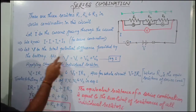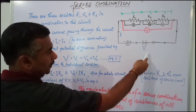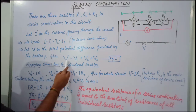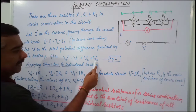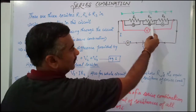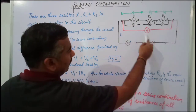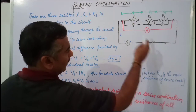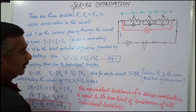Let V be the total potential difference provided by the battery. For a series combination, this total potential difference is divided across all the resistors, such that V — the total potential drop — equals the sum of the potential drops across the individual resistors: V1 is the drop across R1, V2 across R2, and V3 across R3. So V equals V1 plus V2 plus V3. We consider this as Equation 1.